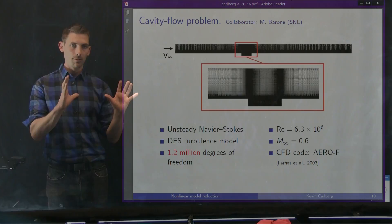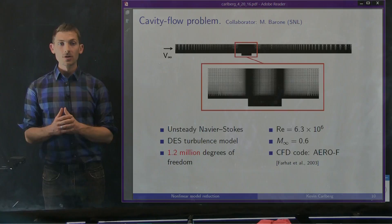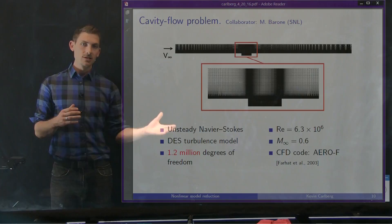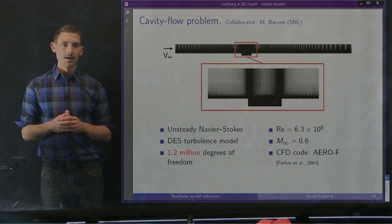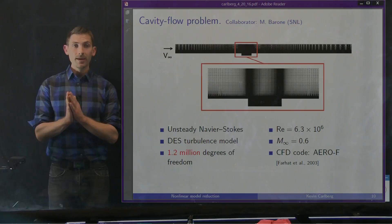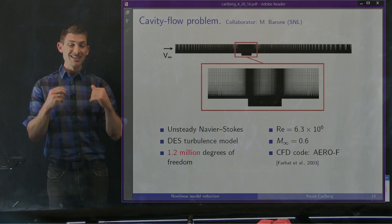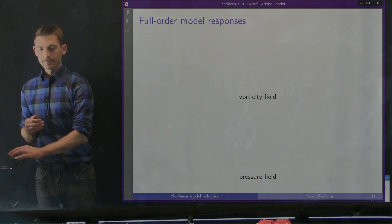Let's try this POD Galerkin model on the captive carry problem with cavity flow — work with Matt Barone at Sandia. We solve the unsteady Navier-Stokes equations using a DES turbulence model. The full order model has about a million degrees of freedom, Reynolds number is 6 million, Mach number is 0.6, solved in a vertex-centered finite volume code known as AeroF developed by Charbel Farhat and collaborators at Stanford. The results I'll show are for POD Galerkin purely reproducing the training case — almost the easiest possible test.